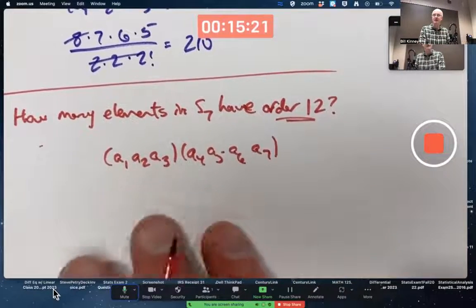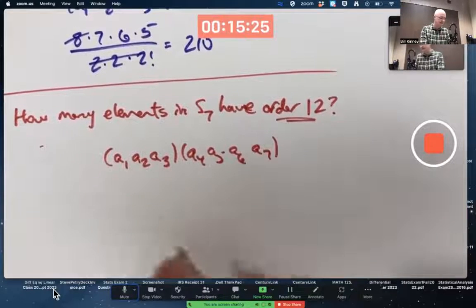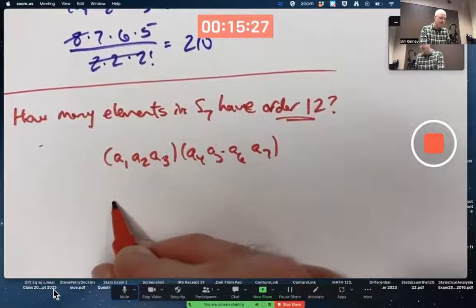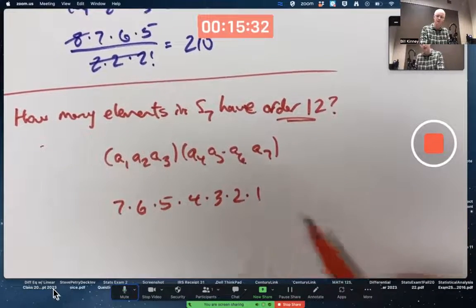So let's figure out how many disjoint cycles there are that can be written this way. Seven times six times five times four times three times two times one.